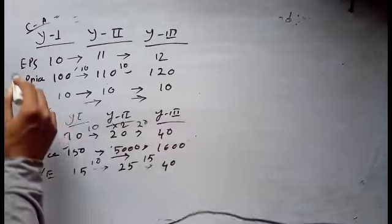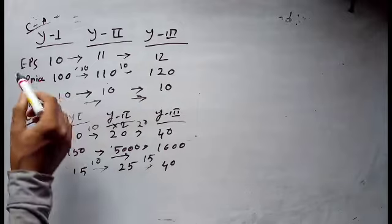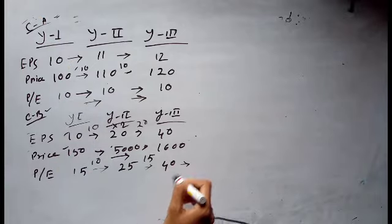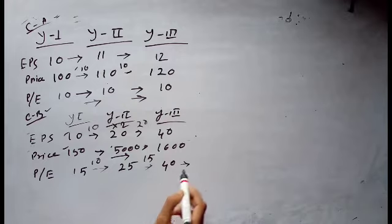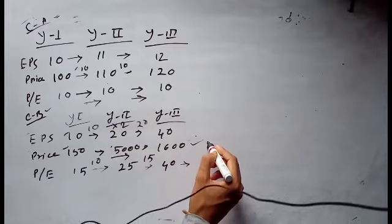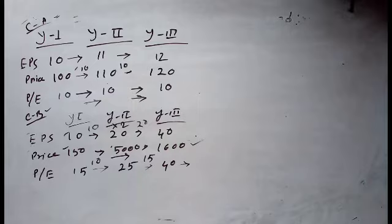So in Company B, the earning per share is growing rapidly and the price of the share is much higher. The price is very expensive, the return is high, and the price earning ratio is much higher. This is the concept we explored — now we will understand it with a small numeric problem.